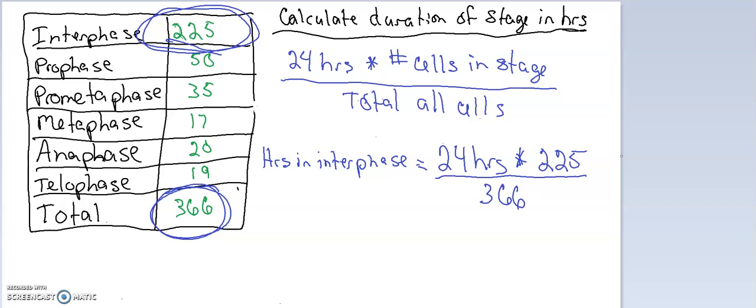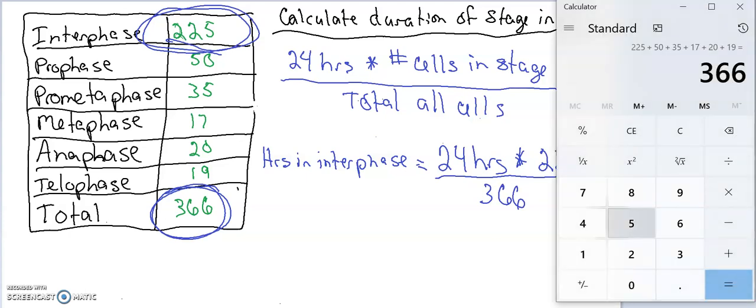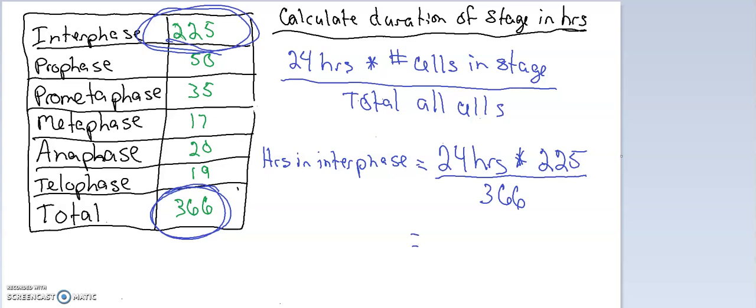So we pull up trusty calculator here, and that is 24 times 225 divided by 366, and that gives us 14.75 hours.